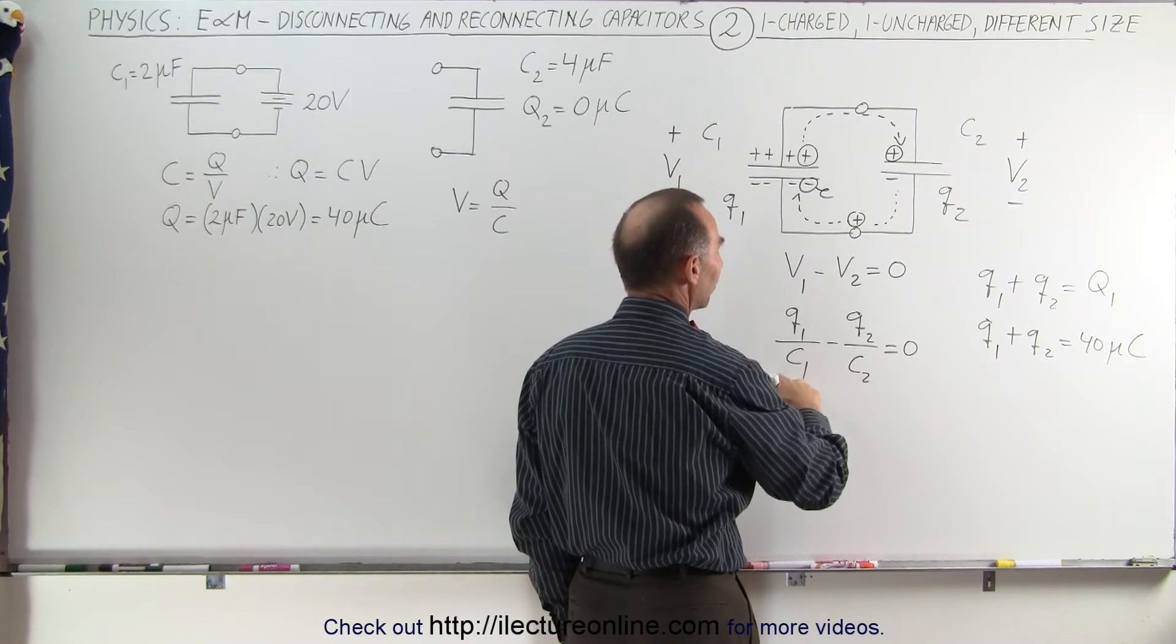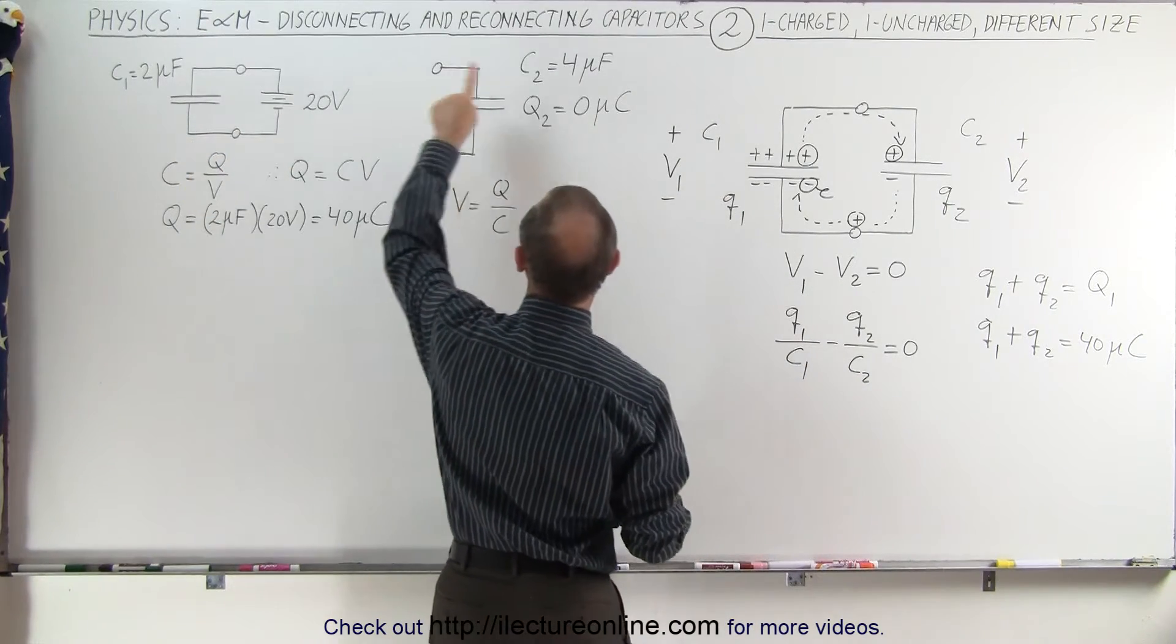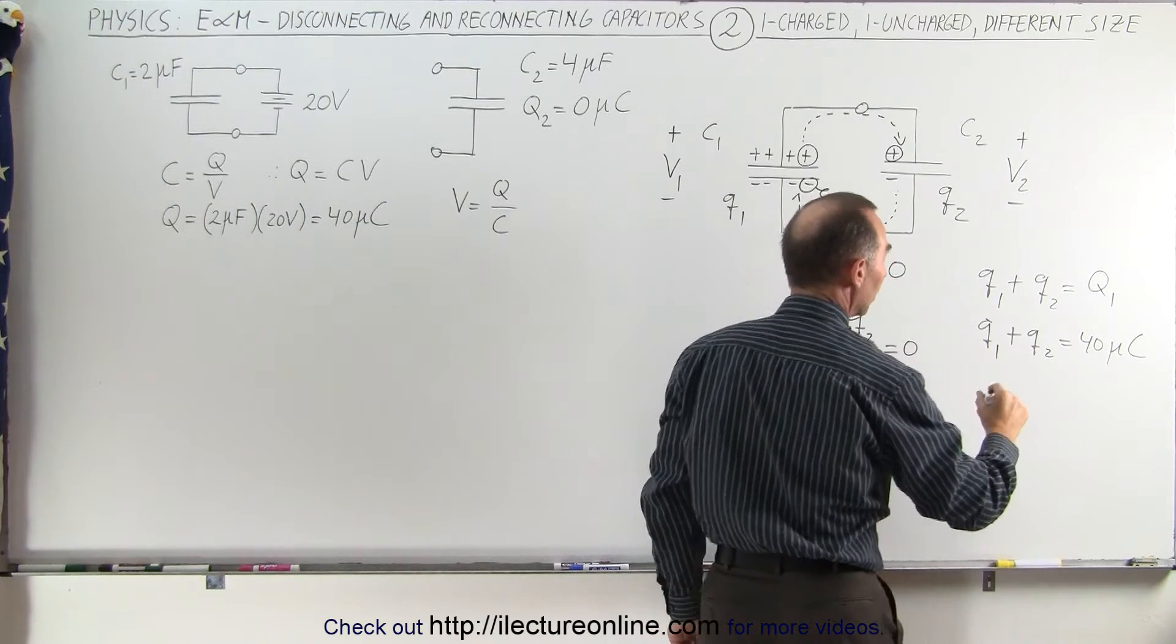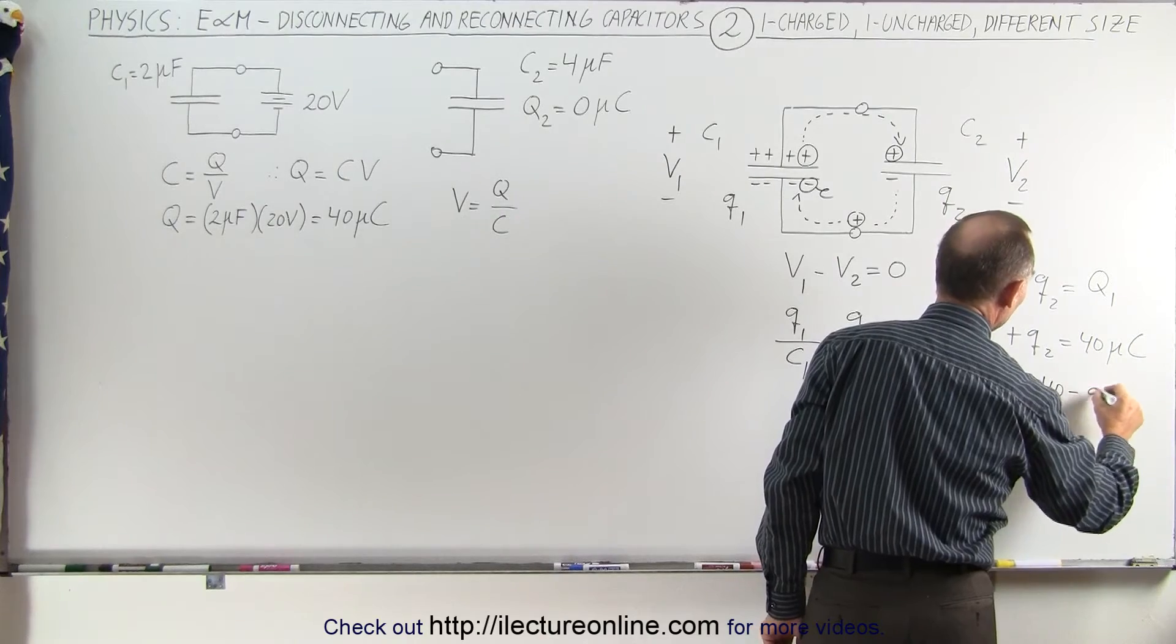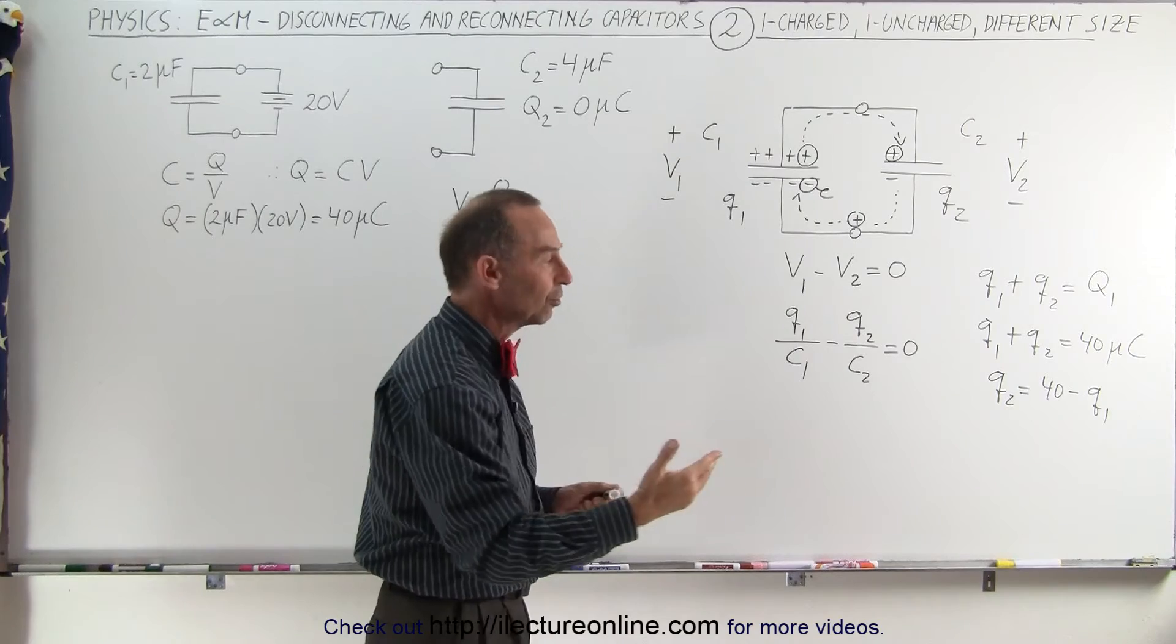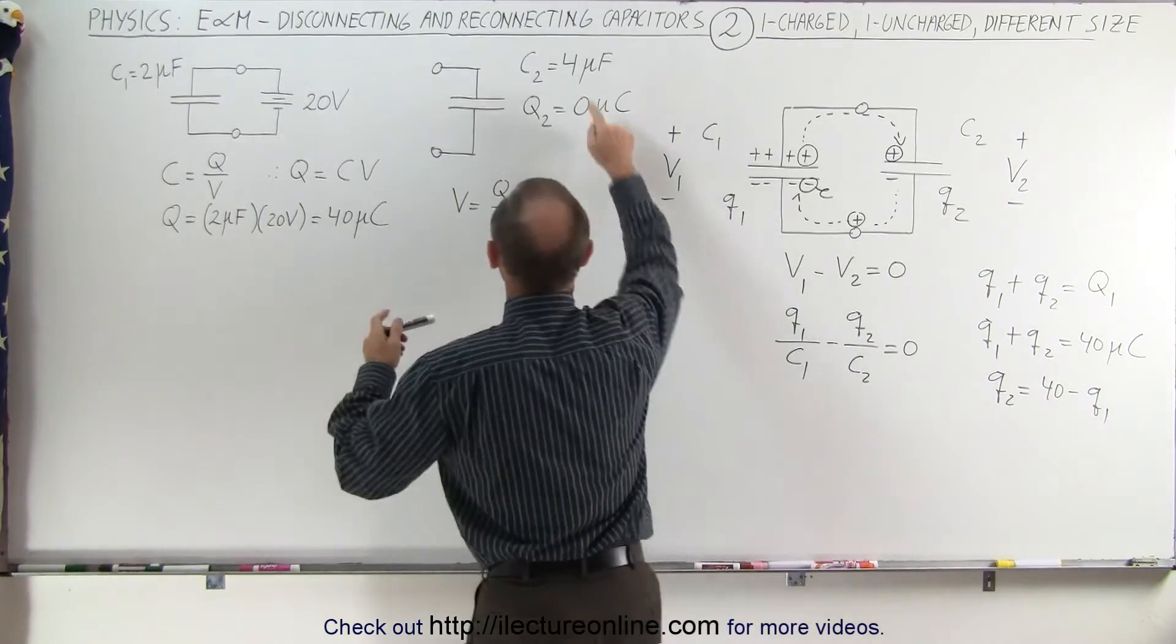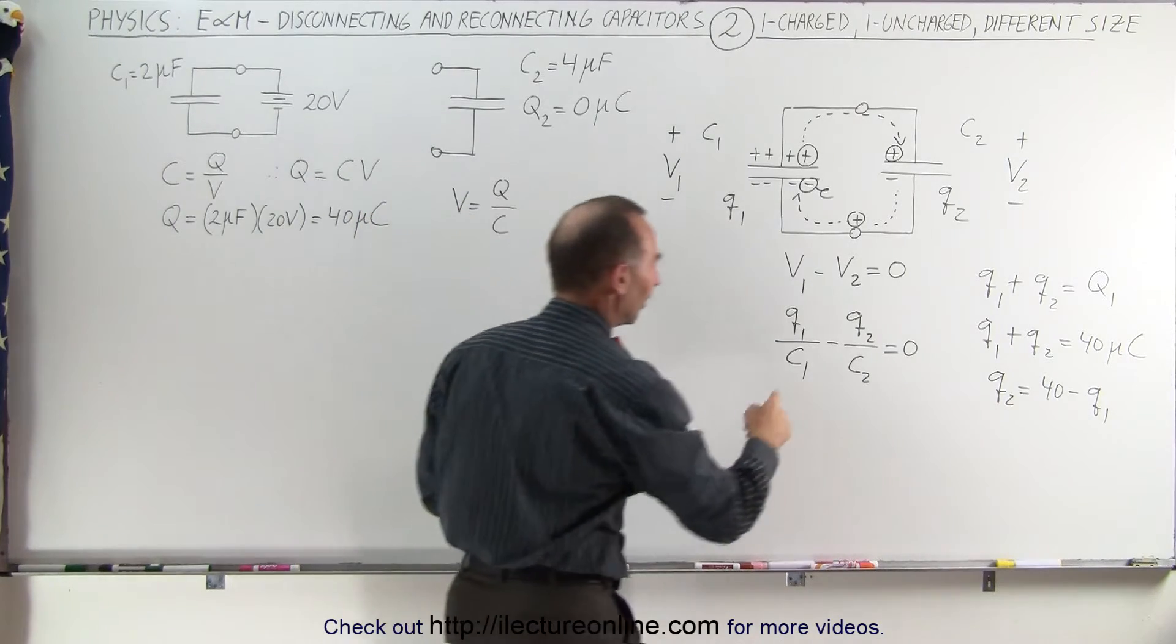What that means is as follows. I can replace C1 and C2 with what they're equal to. C1 is 2 microfarads, C2 is 4 microfarads. And I can replace Q2 by what Q2 is equal to in terms of Q1. We can say that Q2 is equal to 40 minus Q1. Now what I'm going to do is I'm going to drop the micro coulombs and microfarads just to get cleaner equations. We can do that because we know that this is indeed in terms of micro coulombs and this is going to be in terms of microfarads. So we just have numbers. So let's replace the numbers and see what we get.